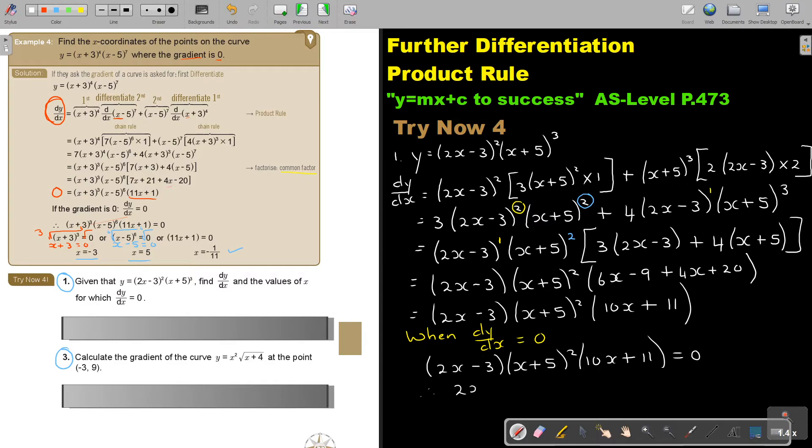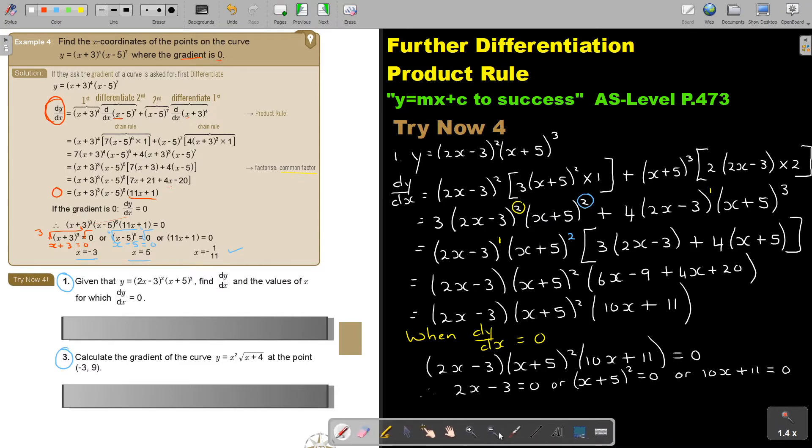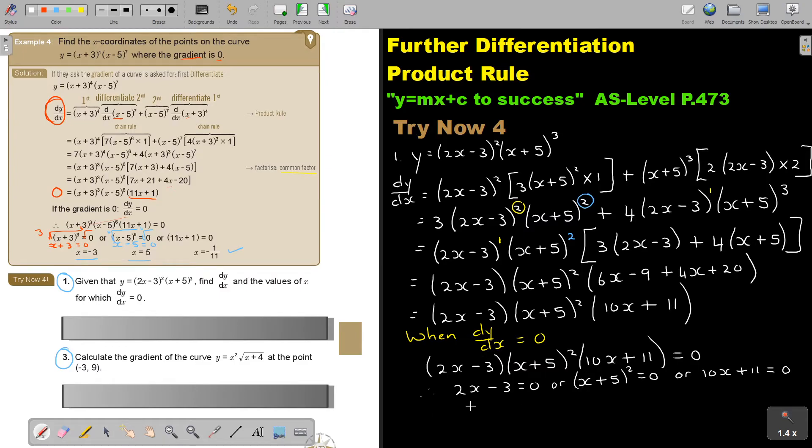Therefore, 2x minus 3 equals 0, or x plus 5 square equals 0, or 10x plus 11 equals 0. So if I'm going to look at this answer, I'm just going to say x is equal to 3 over 2. Or, remember I take the square root, square root, and then x is equal to negative 5.